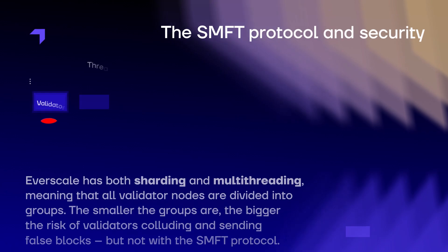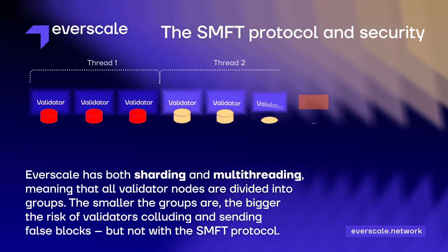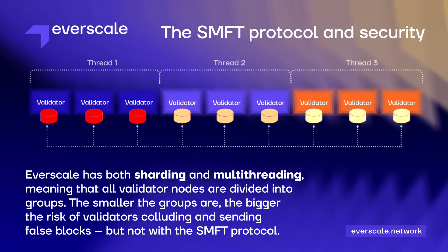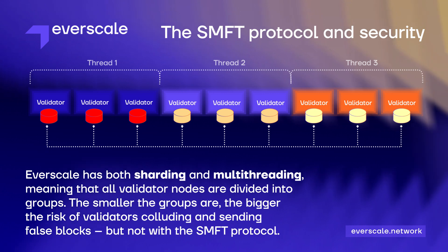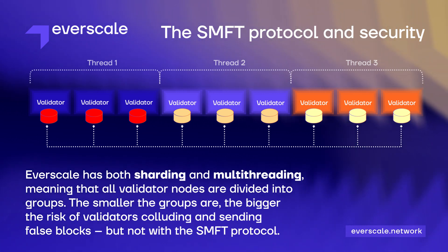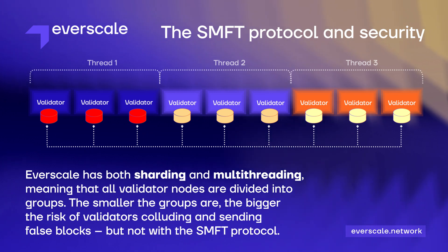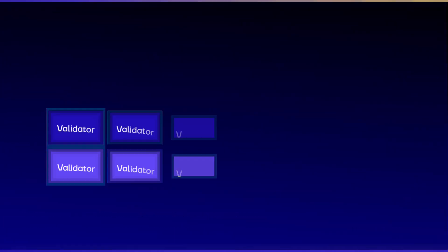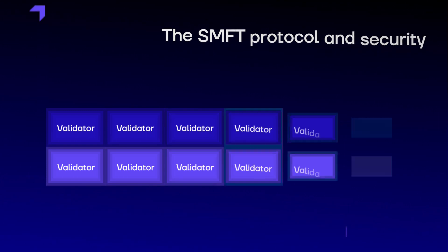Everscale has both sharding and multi-threading, meaning all validator nodes are divided into groups. The smaller the groups are, the bigger the risk of validators colluding and sending false blocks — but not with the SMFT protocol.